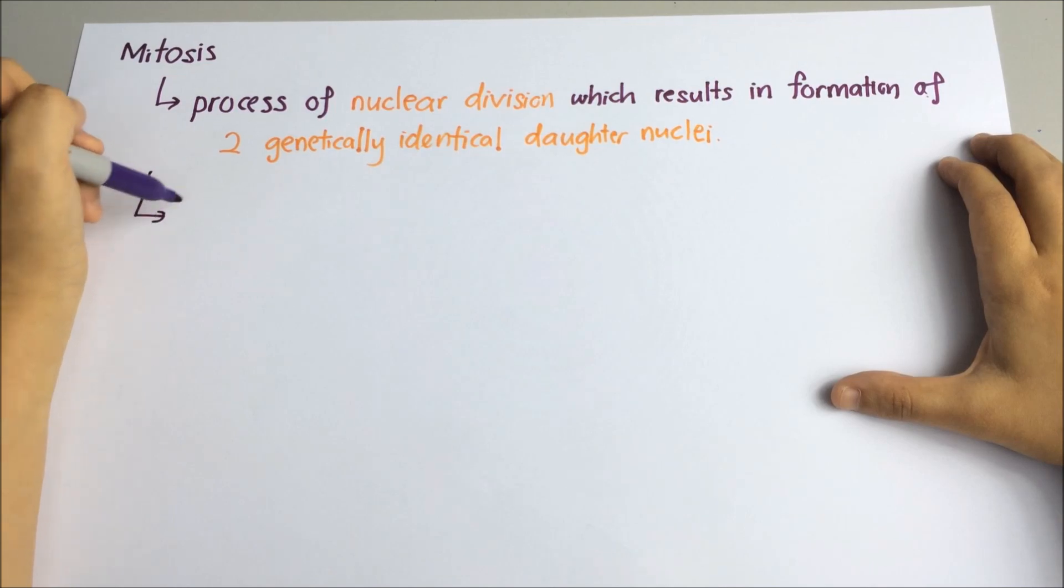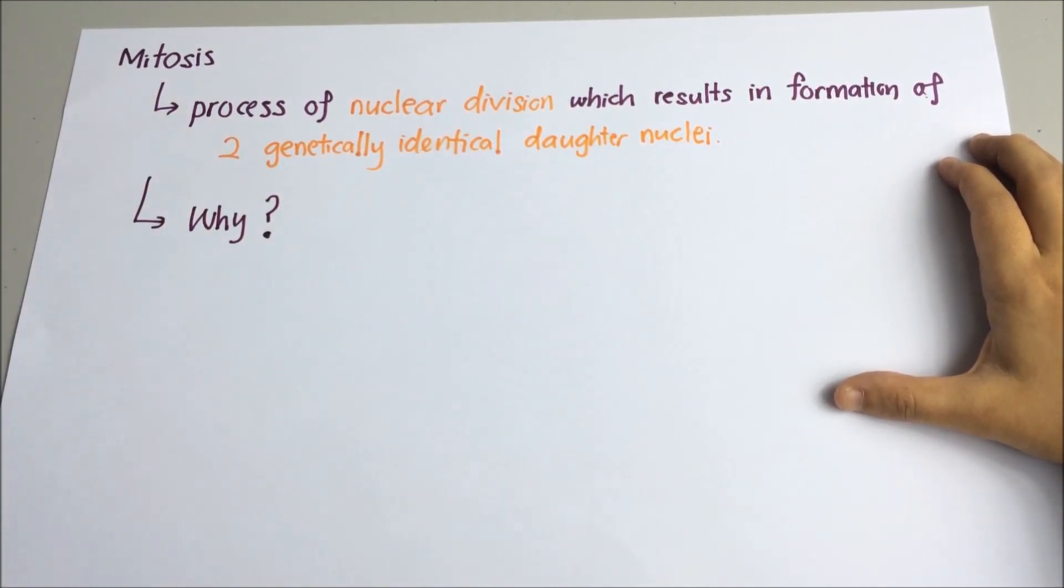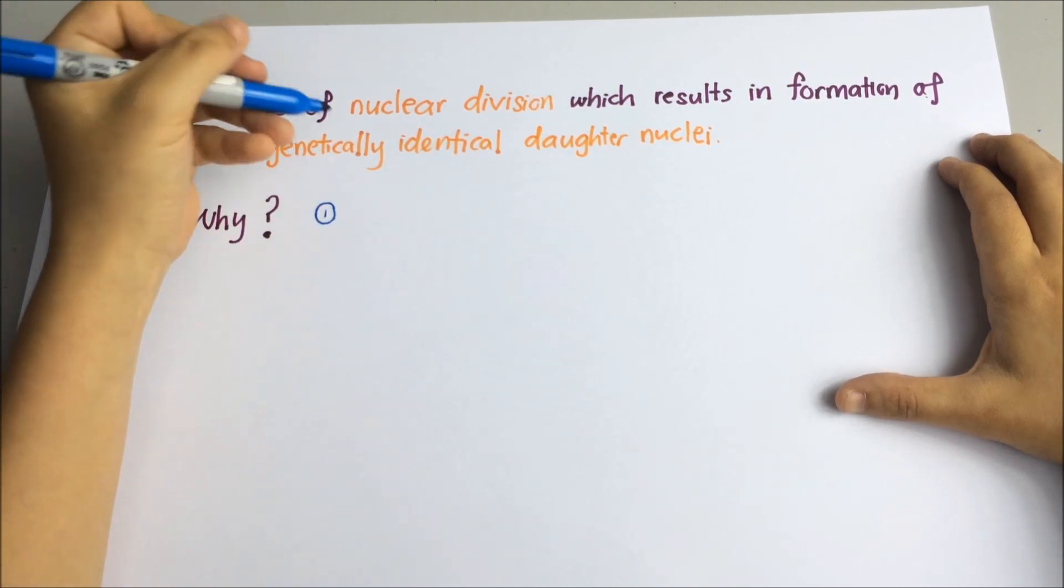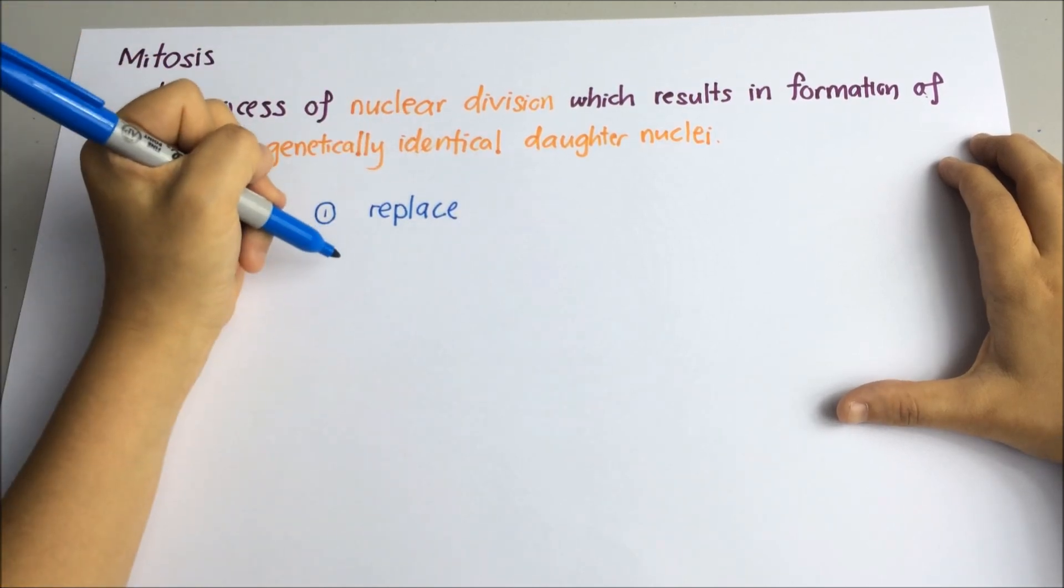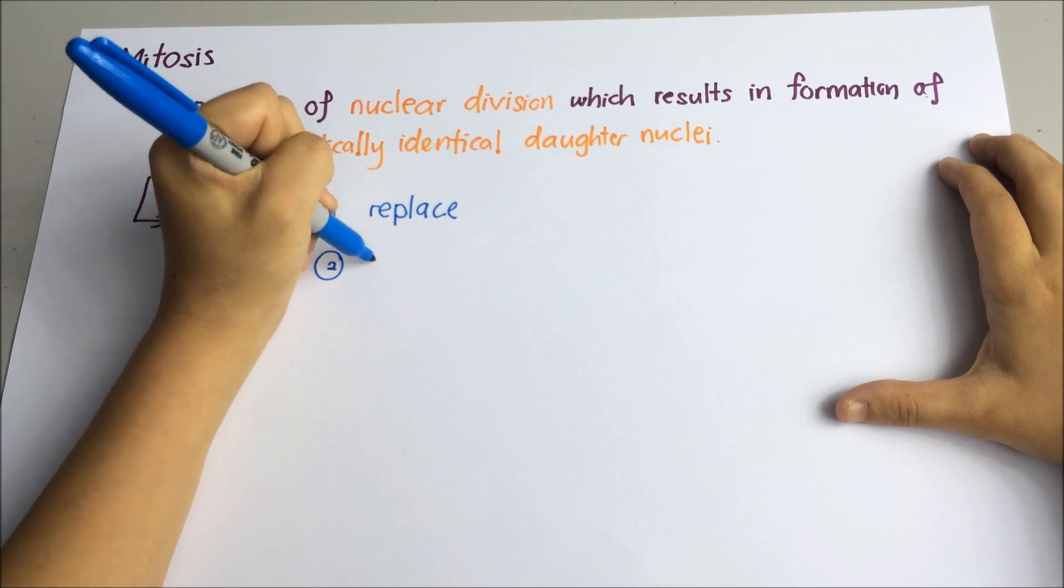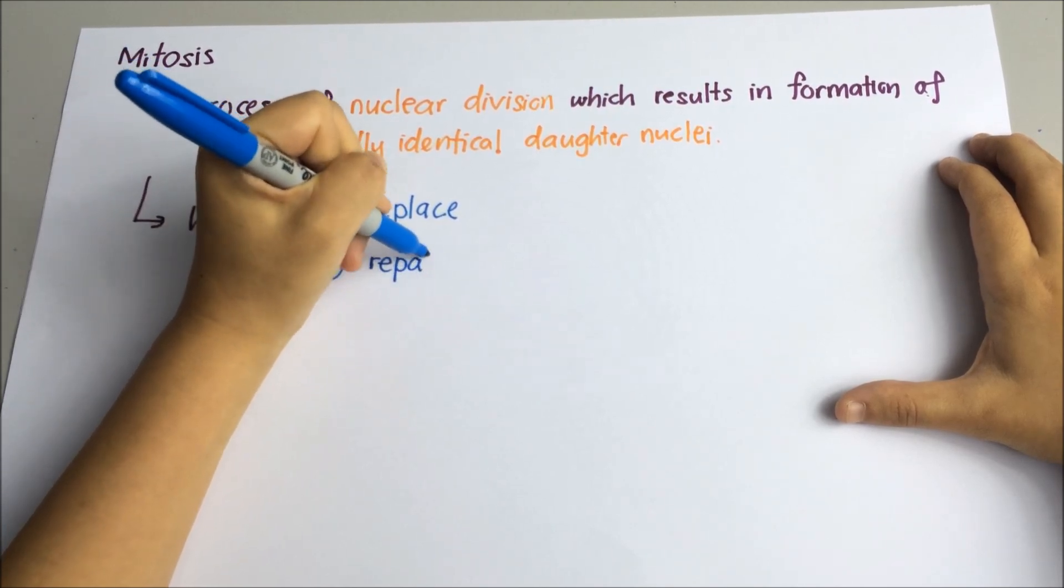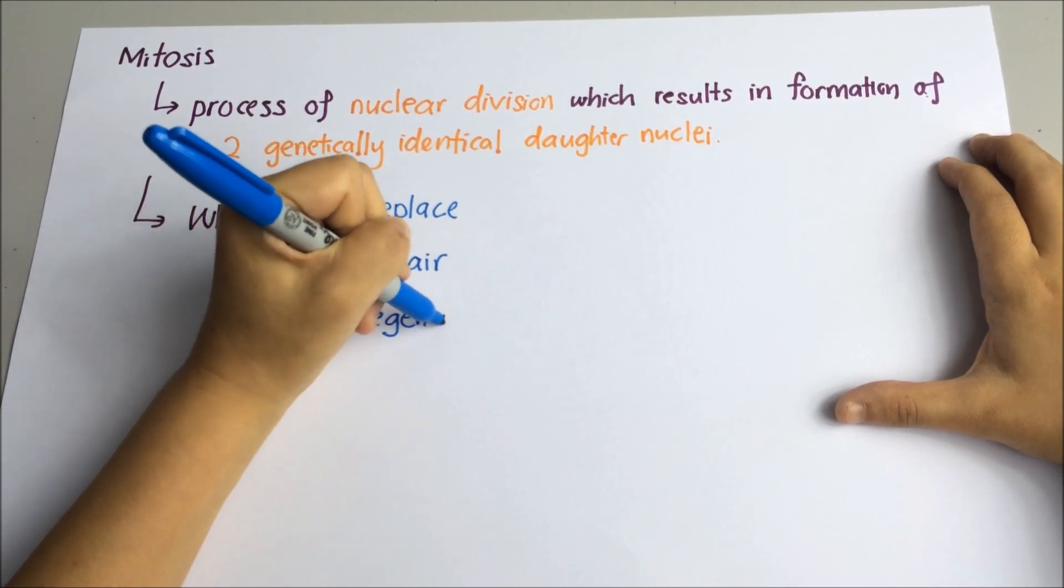So why is mitosis important? It is the way in which any cells divide when they are first replacing their worn out cells, second to repair any damaged part of its body, and third to regenerate.